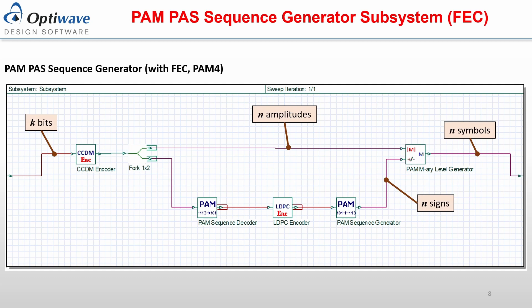The OptiSystem implementation of the PAM-pass sequence generator is shown here. Following the CCDM encoder, the symbol sequence is copied, where one branch is inserted to the top input port of the PAM symbol level generator, while the second branch is sent to the FEC encoder. The symbol sequence is converted to a bit sequence using the PAM sequence decoder component. An LDPC encoder then encodes this bit sequence and outputs only the generated parity bits. The number of parity bits generated equals the number of symbols within the initial amplitude sequence. These parity bits are then processed by a PAM sequence generator to form the sign sequence, by converting each bit 0 to the symbol negative 1 and each bit 1 to the symbol positive 1. This sign sequence is then input into the second input port of the PAM symbol level generator, which multiplies the two sequences together to generate the full symbol sequence of both positive and negative values.